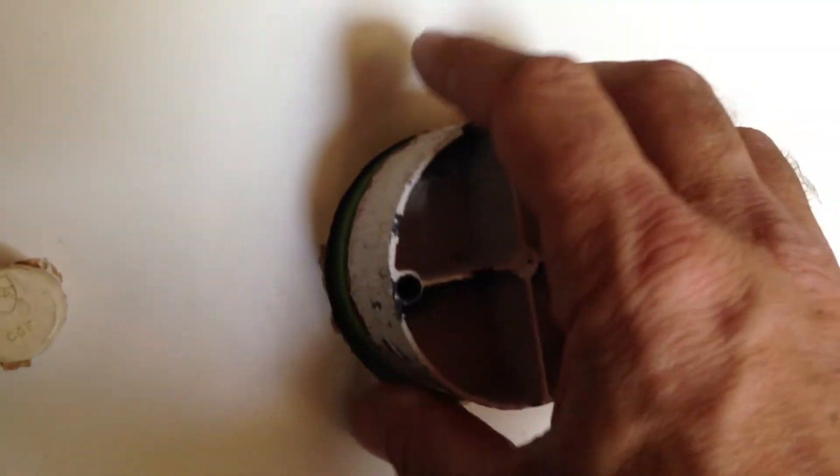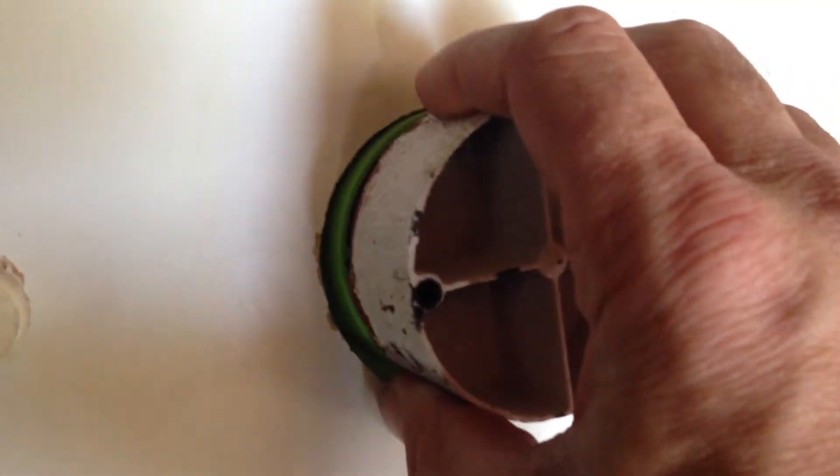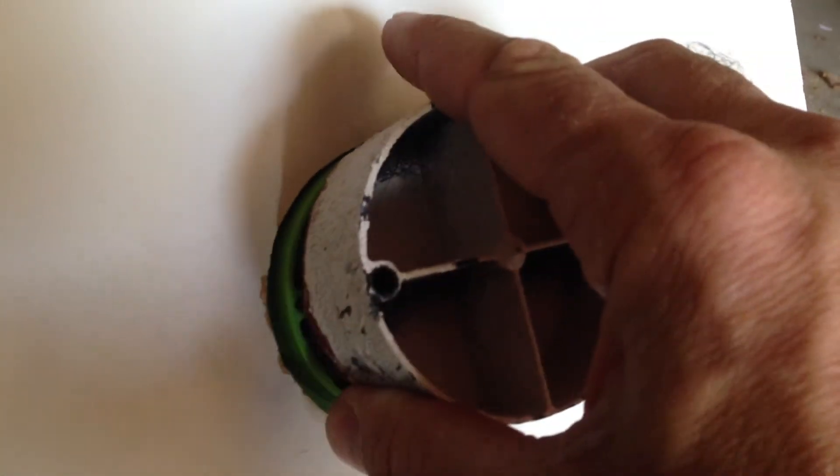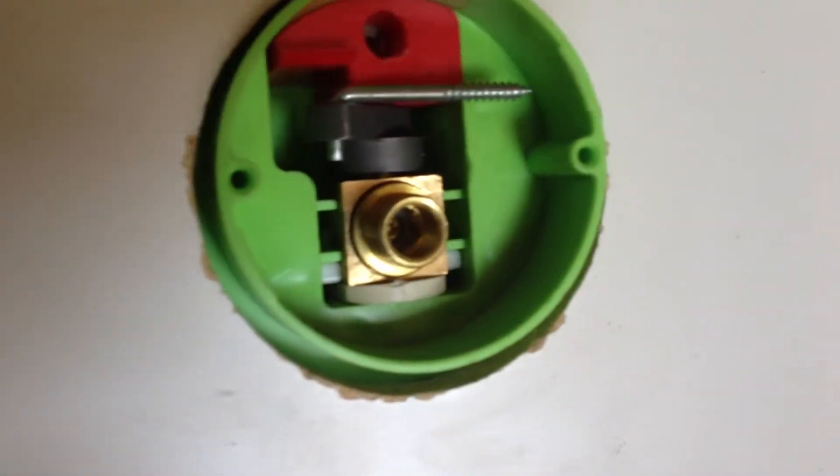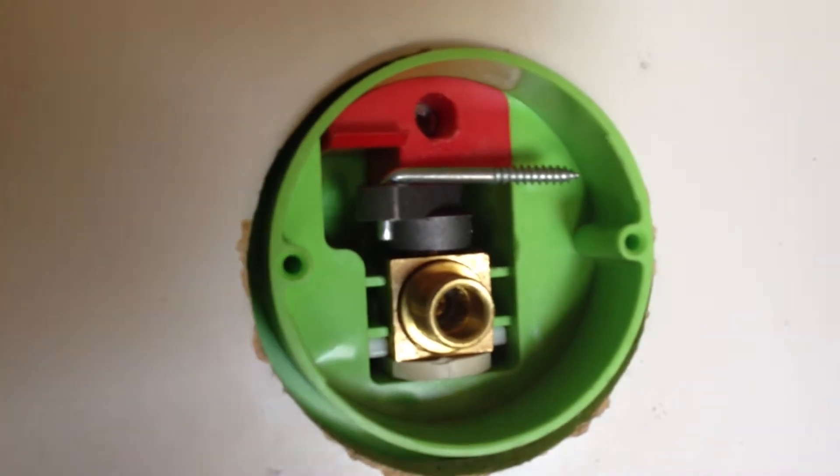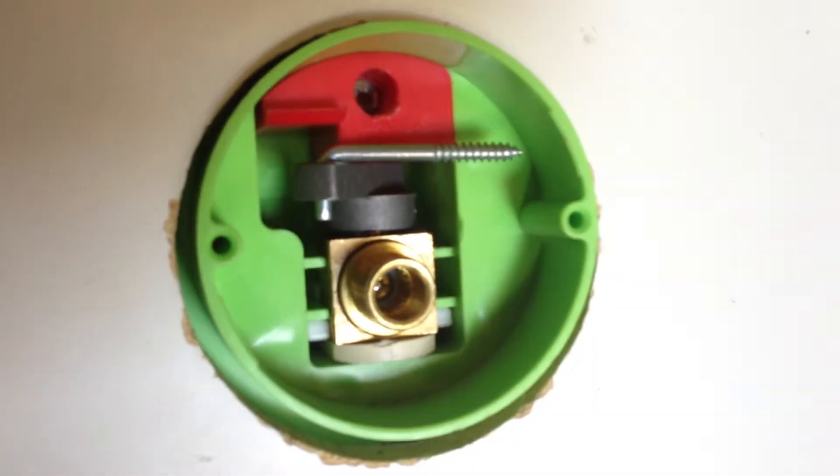When you're ready to set your supply and your escutcheon, you just remove your debris cover. There's also screw holes in here if you wanted to screw it down to ensure other trades don't take them off, but it just protects your valve and it's nice and clean when you're ready to go.